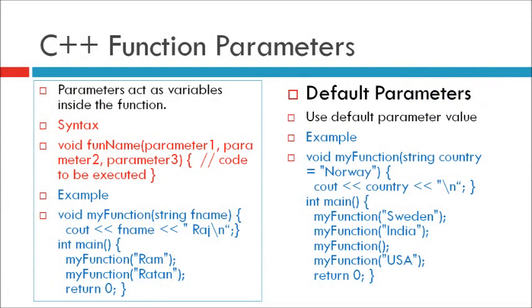C++ Function Parameters: Information can be passed to functions as parameters. Parameters act as variables inside the function. Parameters are specified after the function name inside the parenthesis. You can add as many parameters as you want, just separate them with a comma.